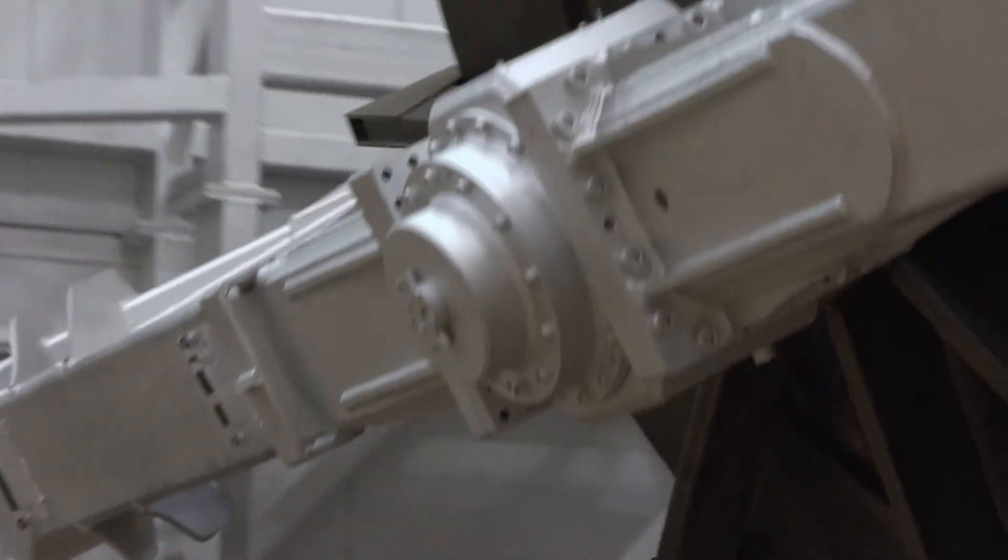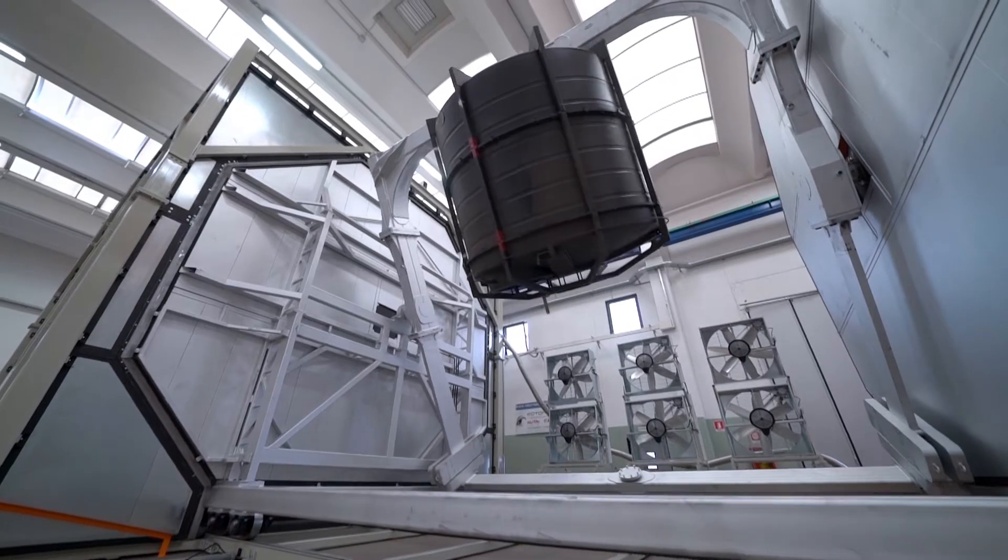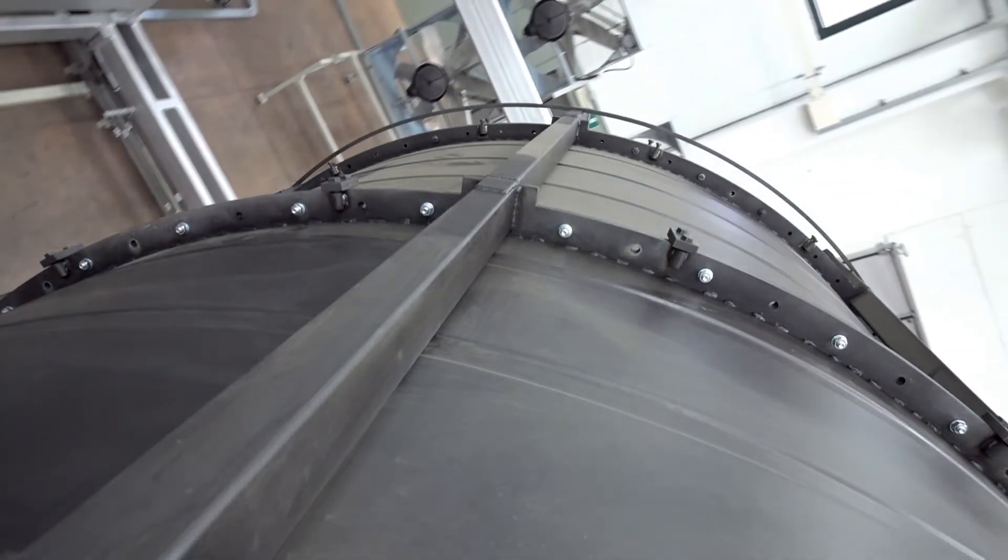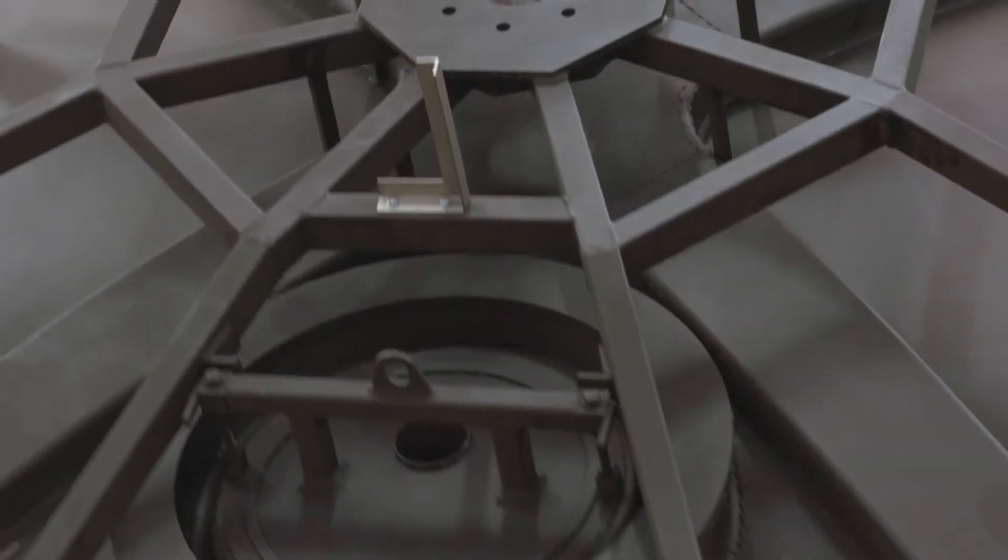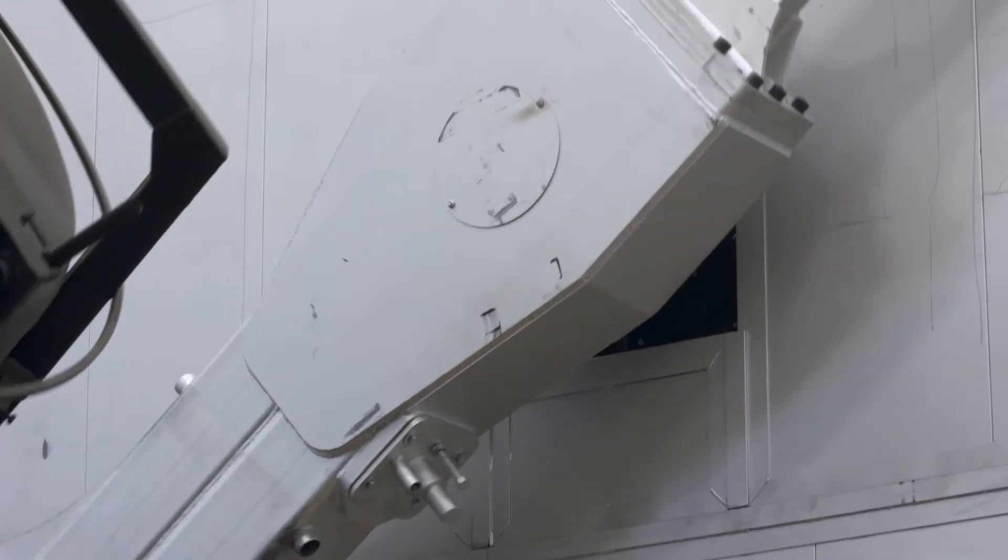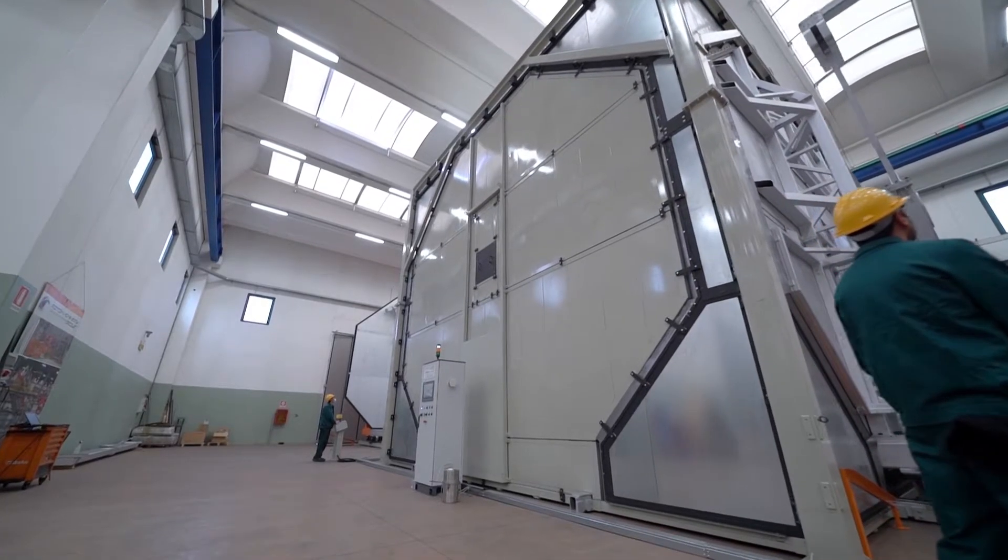The SRM 7500 2-cart rotomoulding machine is the largest shuttle-type machine ever built. It has a spherical diameter of 7500mm and presents all the plus points of a Rotomachinery Group shuttle-type machine.